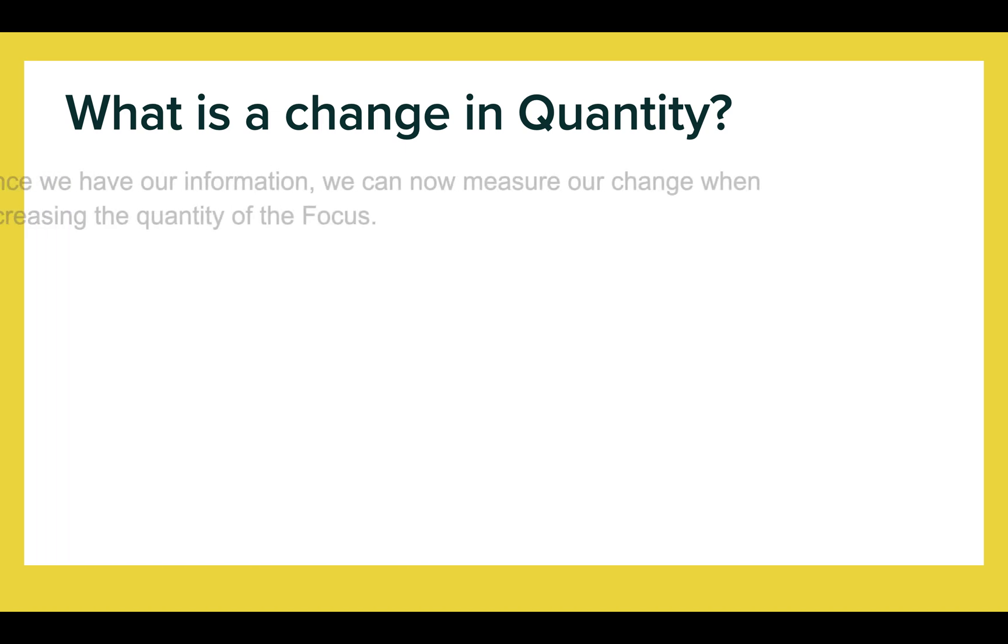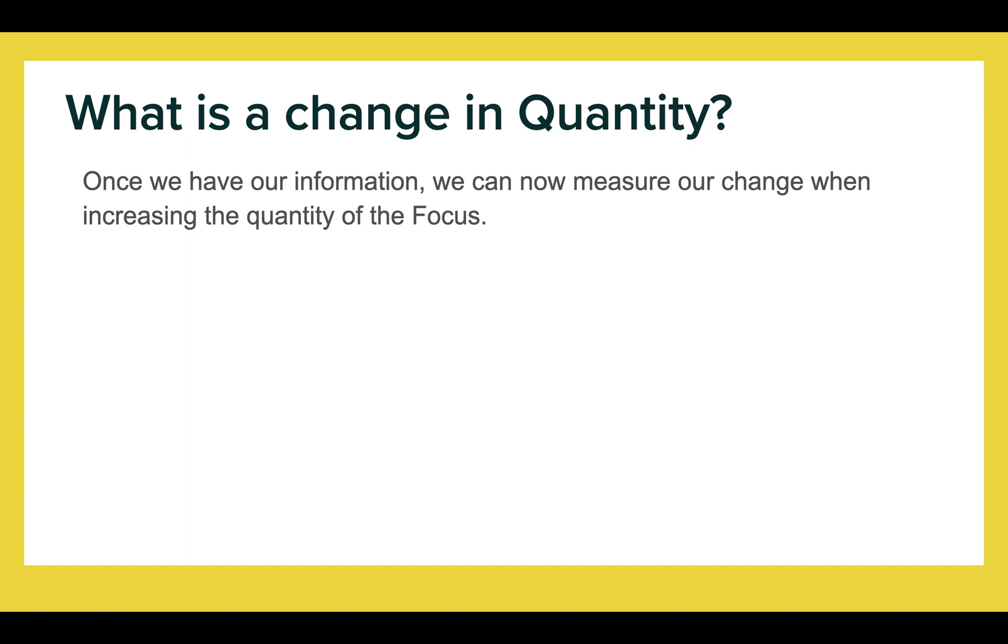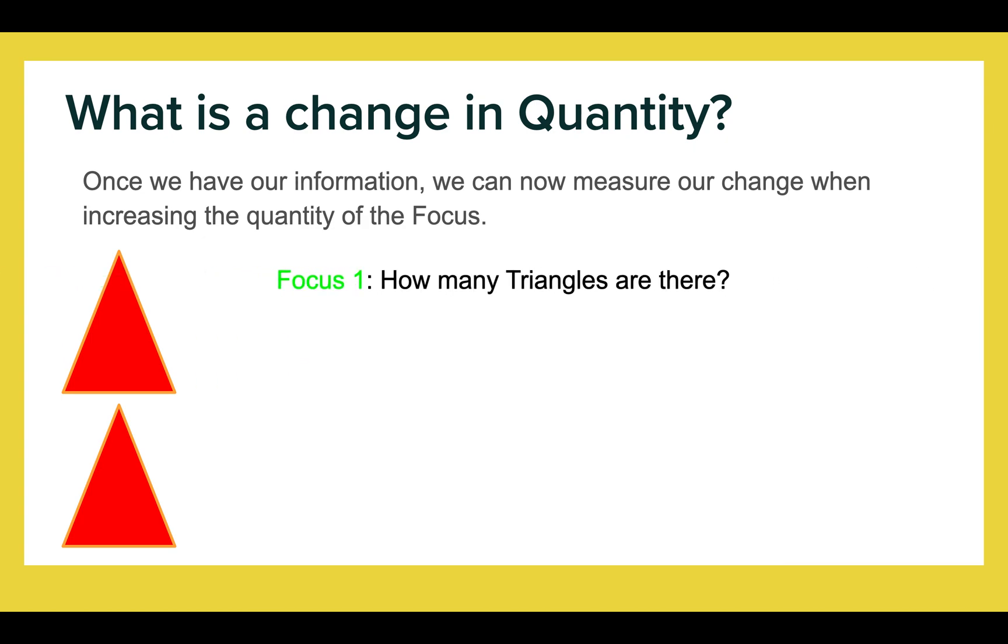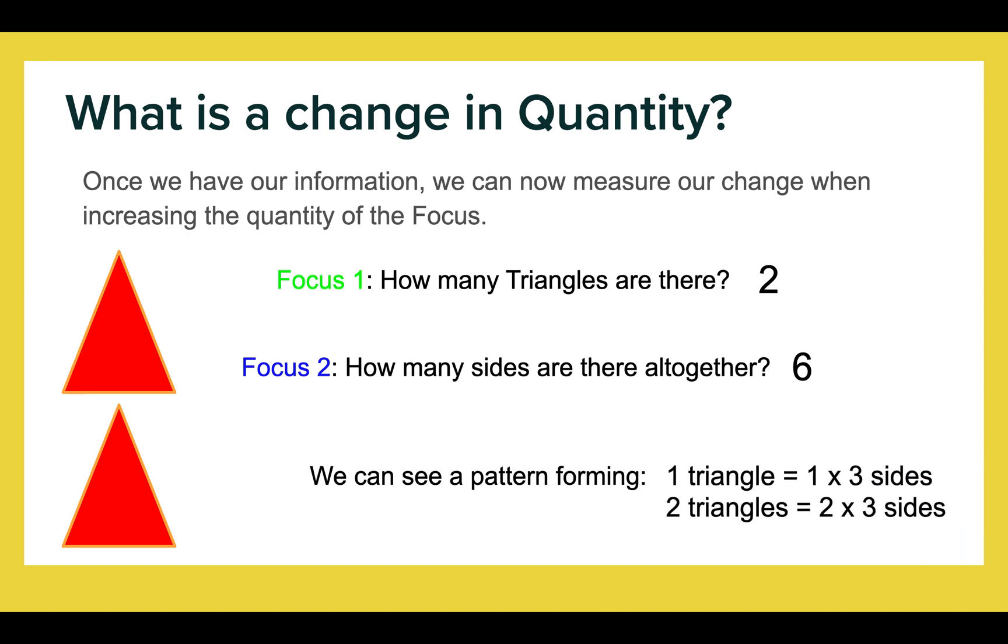Let's take that a little bit further. Once we have this basic information, we can now measure changes in quantity when increasing the quantity of one of the focus. So, let's increase a quantity. How many triangles do we have now? Nice, easy question. We know that there are 2 triangles. But now we have 2 triangles, our second focus changes. If we have 2 triangles, how many sides do we have now? Yep, easy. If we have 3 sides per triangle, and there are 2 triangles, there are 6 sides. So we can see that the quantity has now changed quite drastically.